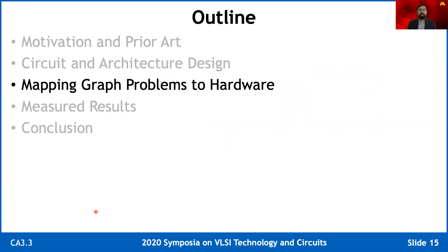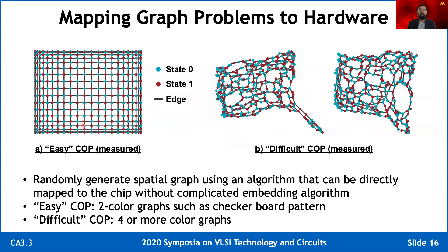Now let's look at the mapping of graph problems to hardware. We randomly generated spatial graphs that can be directly mapped to the chip, where each vertex is represented by one ring oscillator. We generated graphs of two different difficulty levels. The easy COPs, shown here, are two-color graphs — the chip can solve these with an accuracy of 98 to 100%. On the other hand, four-or-more color graphs are designated as difficult COPs, and the chip solved difficult problems with various degrees of accuracy.